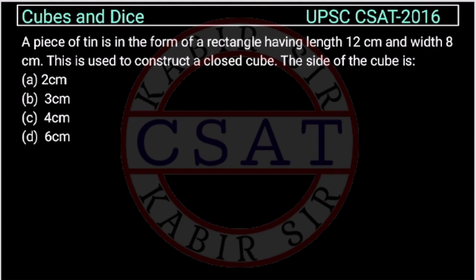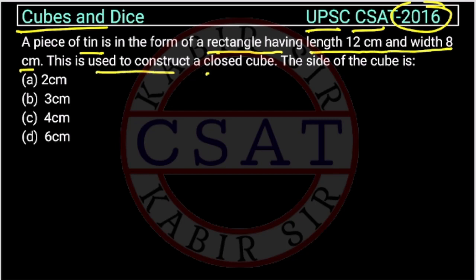Now, let us see this question from the Cubes and Dice chapter asked by UPSC in CSAT paper of 2016. A piece of tin is in the form of a rectangle having length 12 centimeter and width 8 centimeter. This is used to construct a closed cube. The side of the cube is...